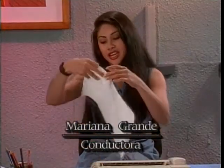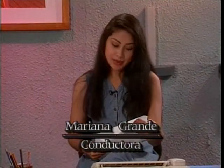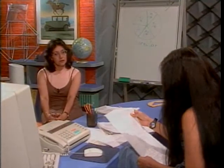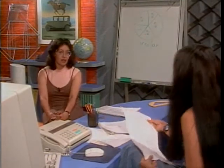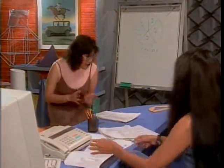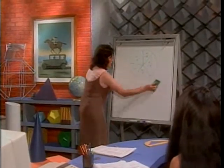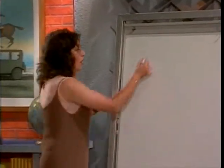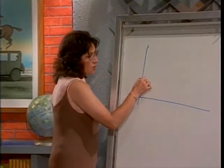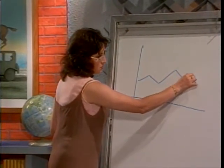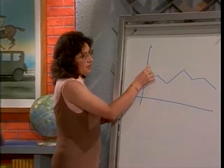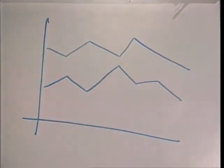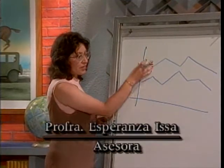Vamos a pasar a un fax que nos envía el señor Carlos Rodríguez desde Jalapa, Veracruz. Su pregunta es: cuando aparece una gráfica con dos líneas, como las del polígono de frecuencia, ¿cómo la interpreta? Cuando aparecen gráficas con dos polígonos — uno así y otro acá — lo que estamos viendo es una gráfica comparativa.